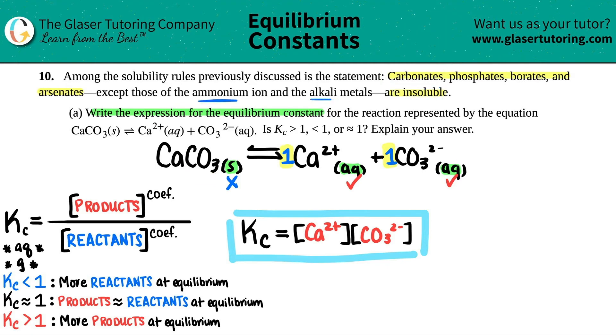Remember, alkali metals, those are group one on the periodic table. Calcium is in group two. So it's not the exception. That's why this is a solid. And once a solid is made, once a precipitate is made, you're not going back.